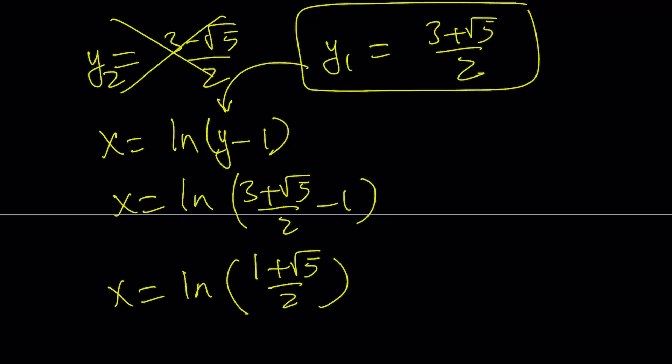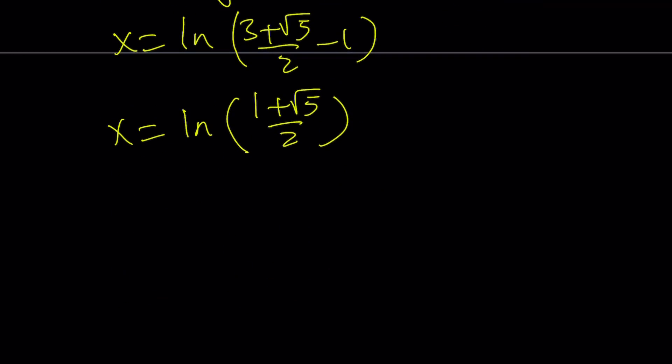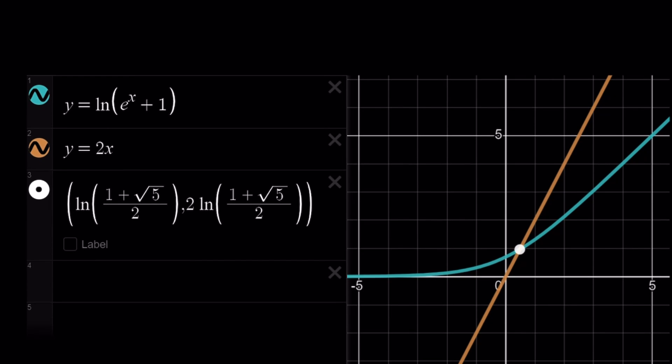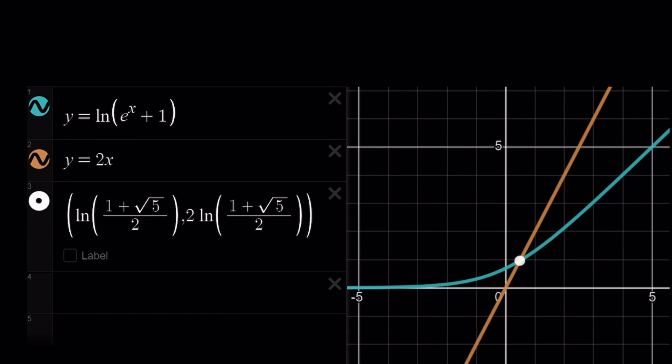This brings us to the end of this video, but let's take a look at the graph. I just wanted to show you what the graphical representation looks like. So here I have y = ln(e^x + 1) along with y = 2x, which is a straight line that passes through the origin. And they intersect at the following point: ln((1 + √5)/2). So this is the x value we have been looking for.